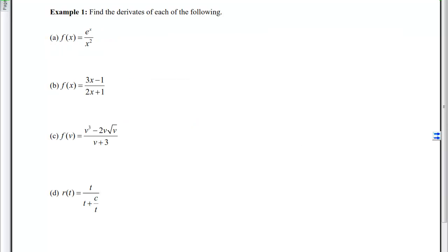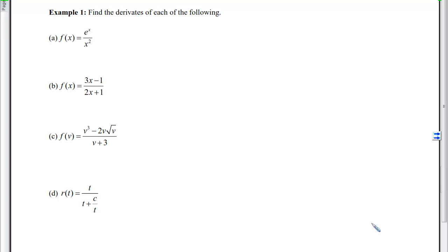With Example 1, we want to find the derivatives of each of the following using that Quotient Rule. If we look at Part A, we can see that we have a High and we have a Low. So the Derivative of F will be our Low D High, which is the Derivative of the High, minus High D Low over Low Squared. If we finish that up, we get e to the x times x squared minus 2x over x to the fourth.